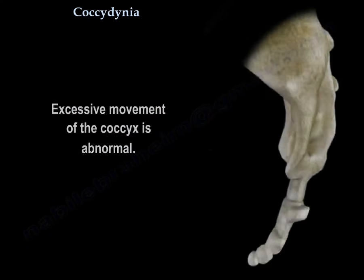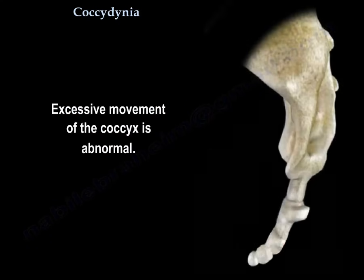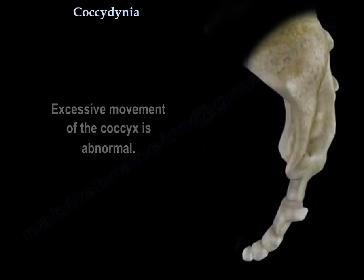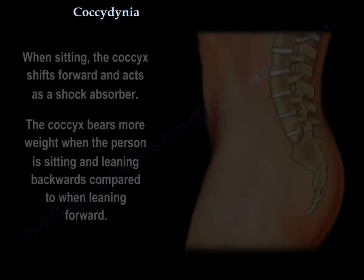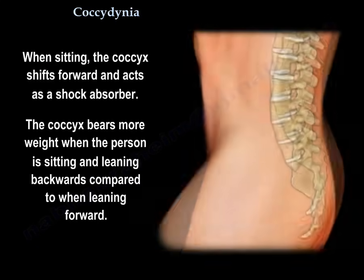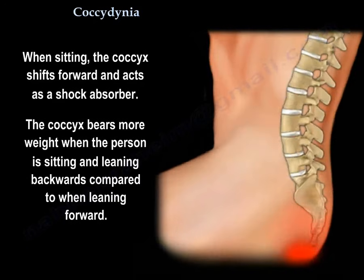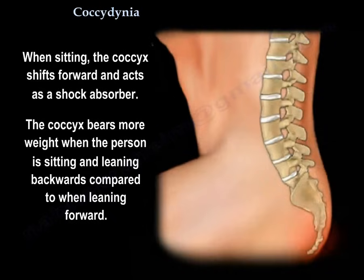Excessive movement of the coccyx is abnormal. When sitting, the coccyx shifts forward and acts as a shock absorber. The coccyx bears more weight when the person is sitting and leaning backwards compared to when leaning forward.